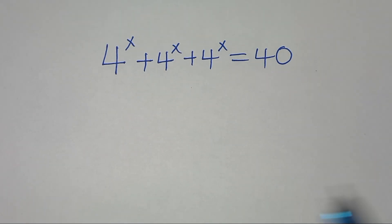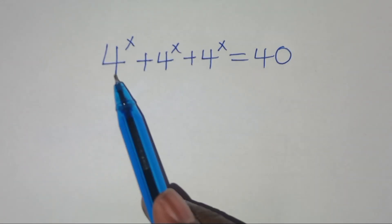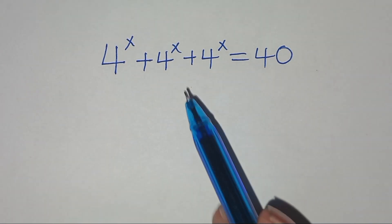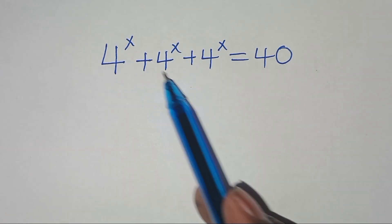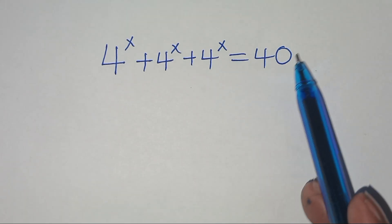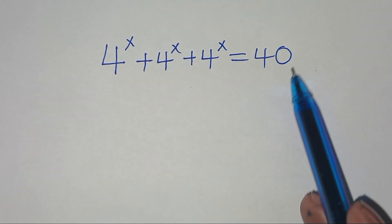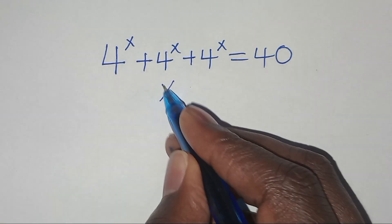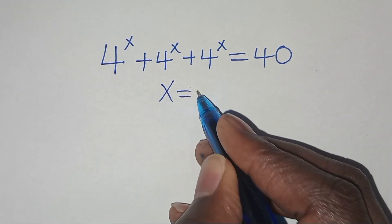Hello everyone, you are welcome to this nice exponential equation, which is 4 to the power x plus 4 to the power x plus 4 to the power x, this is equal to 40. So what is the value of x?